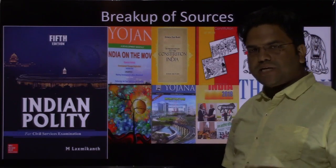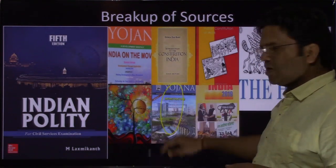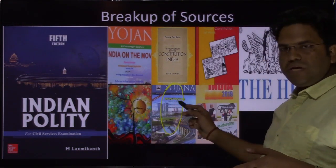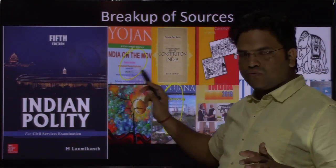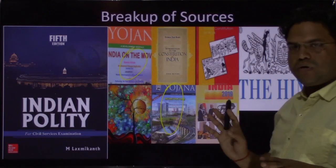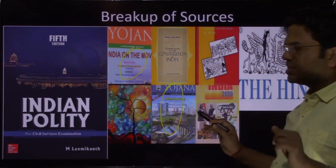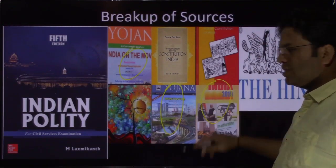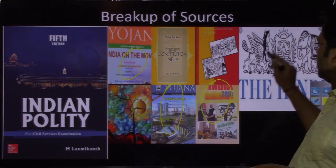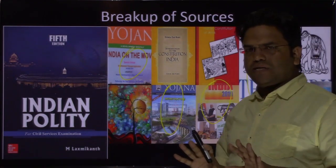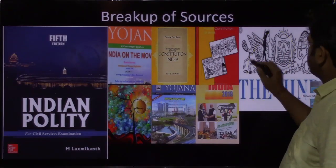Other sources include Yojana — for example, if an article on infrastructure came in Yojana, that becomes economically important. India on the Moon coverage and similar topics. Then the India Yearbook, which has some chapters related to politics. And for current affairs, you can read The Hindu. So this was about sources.